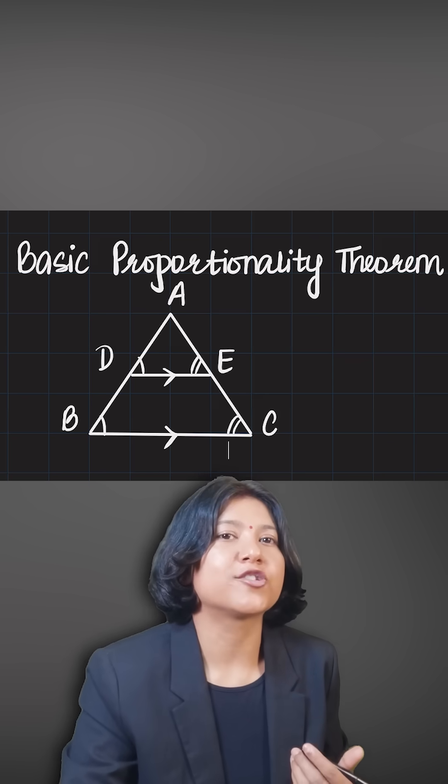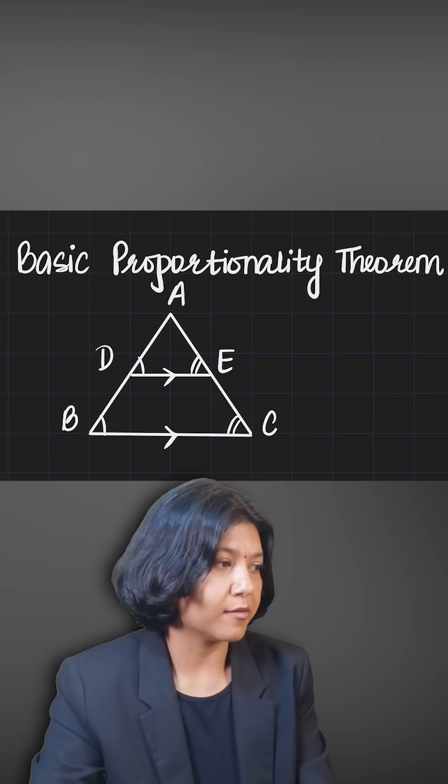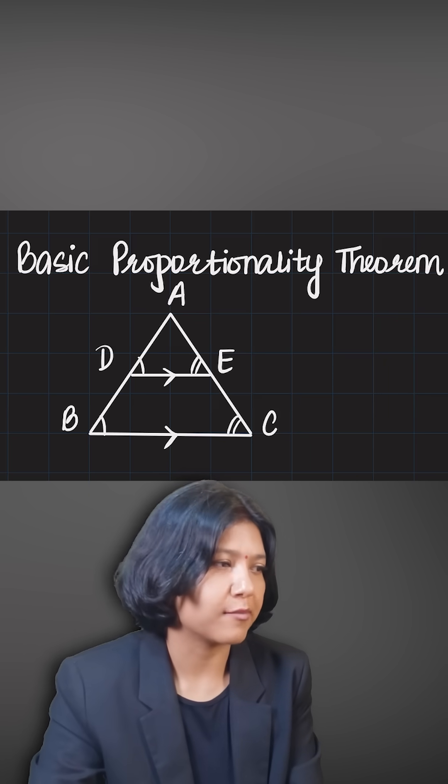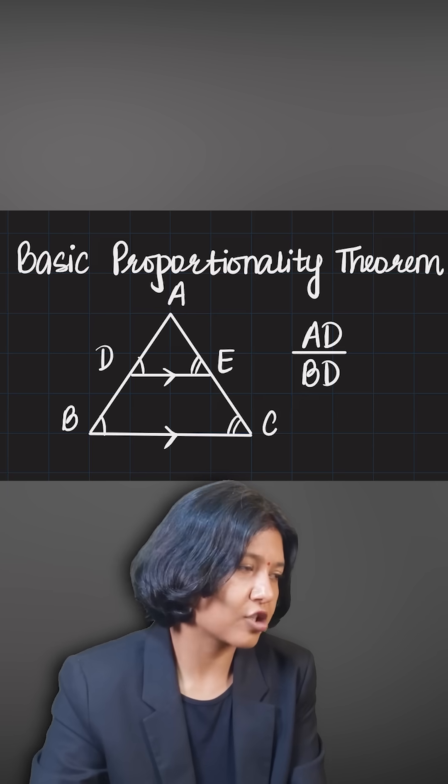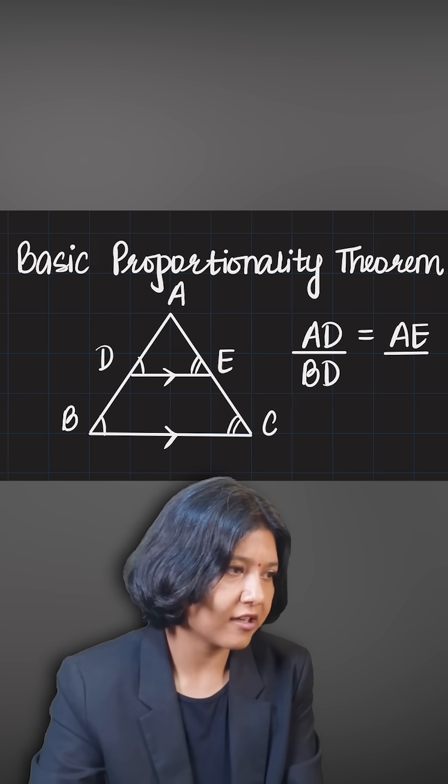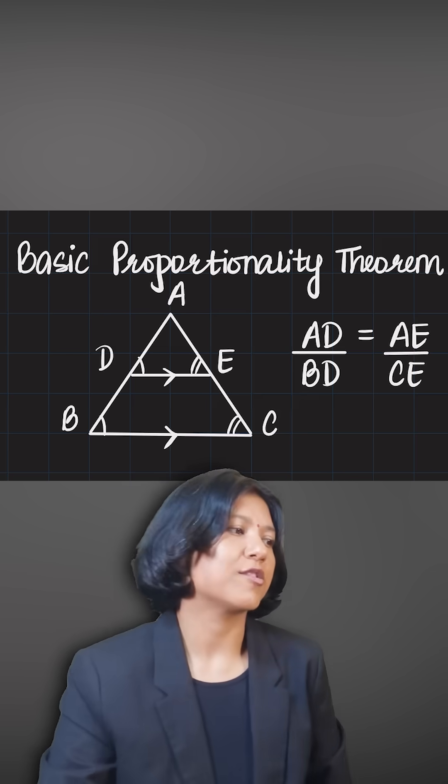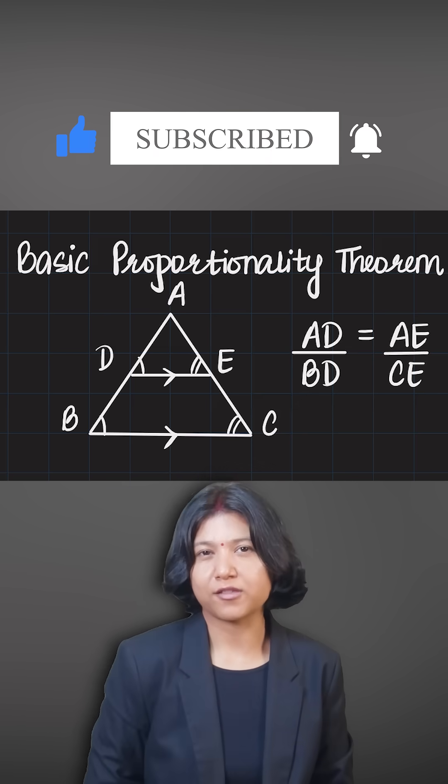But because the line that I drew is in the same triangle, the theorem states that the sides are now divided in the same ratio. This means whatever the ratio of AD and BD would be, the same ratio would be maintained by the second pair of sides that I divided. So AD upon BD equals AE upon CE. This is called BPT or Thales Theorem.